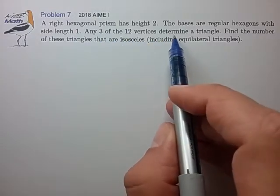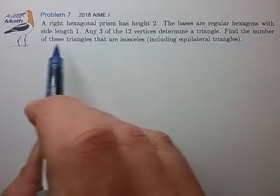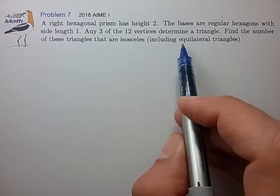Any three of the 12 vertices determine a triangle. Find the number of these triangles that are isosceles, including equilateral.